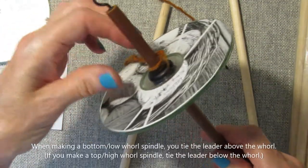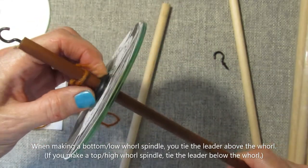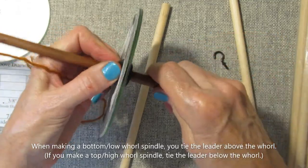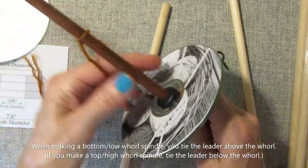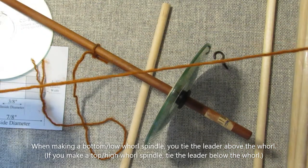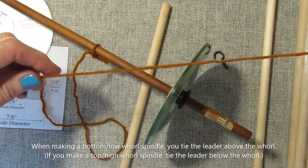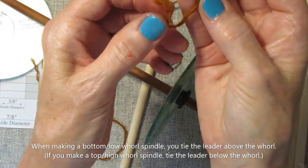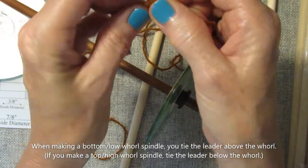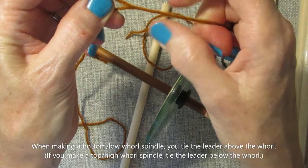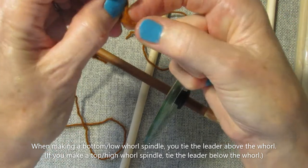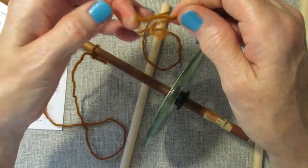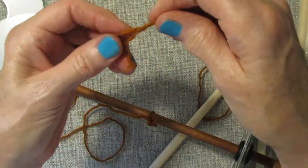And the only other thing that you can do now is go ahead and get your leader on there. I'm going to stick with the bottom whorl. The leader is about 18 inches of a two-ply yarn that you have. Now one end, you're going to find the two plies and untwist it and open it up a little bit, so that you've got two little ends on one side, like this.